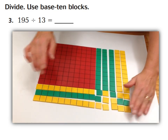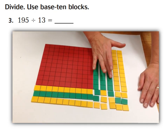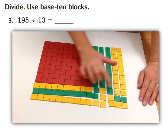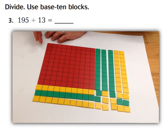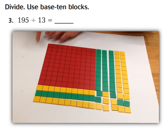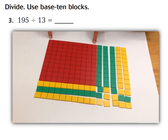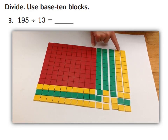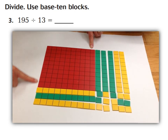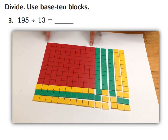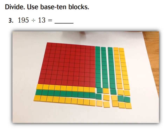Do you see that we have 195 in my array? 100, 10, 20, 30, 40, 50, 60, 70, 80, plus 15 is 195, divided by 13. Remember how our division is by 13? The cool thing is up here will be your quotient. Let's count it up: 10, 11, 12, 13, 14, 15. So 195 divided by 13 would be 15. Our quotient is 15.